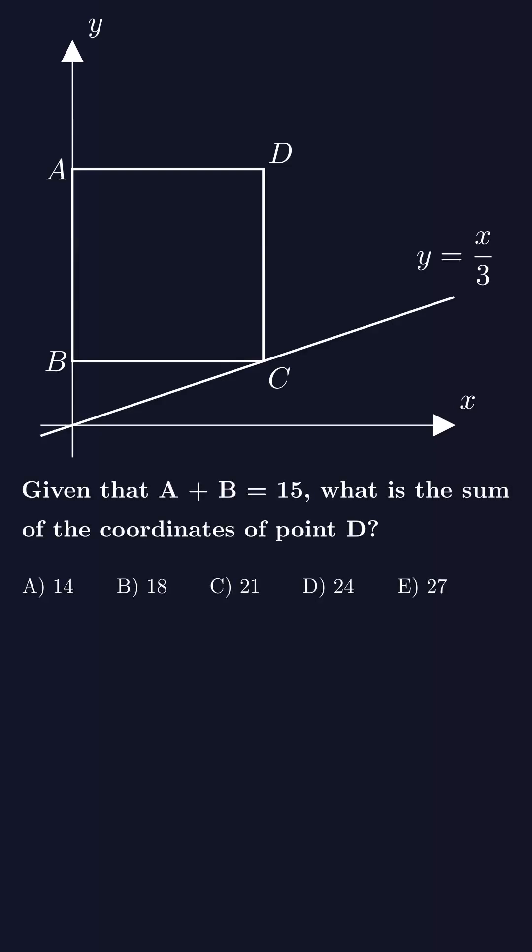We are given a square ABCD, and it says the sum of the coordinates of points A and B is 15. We are asked to find the sum of the coordinates of point D.